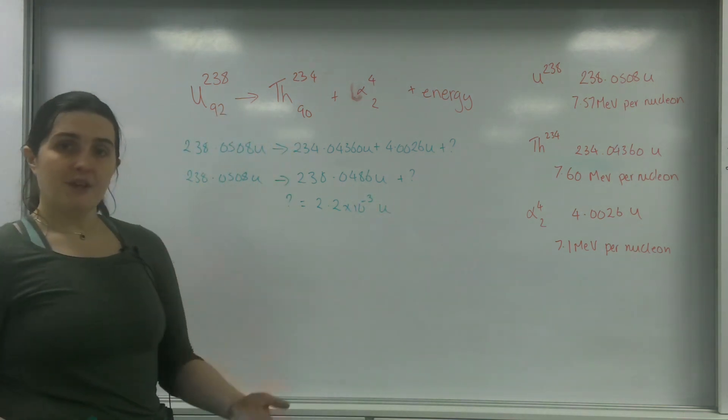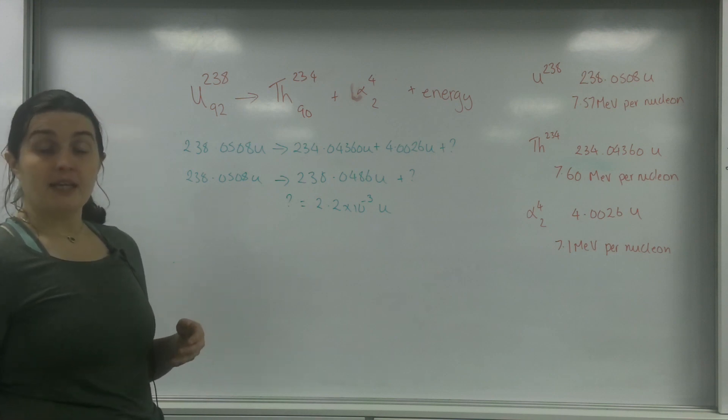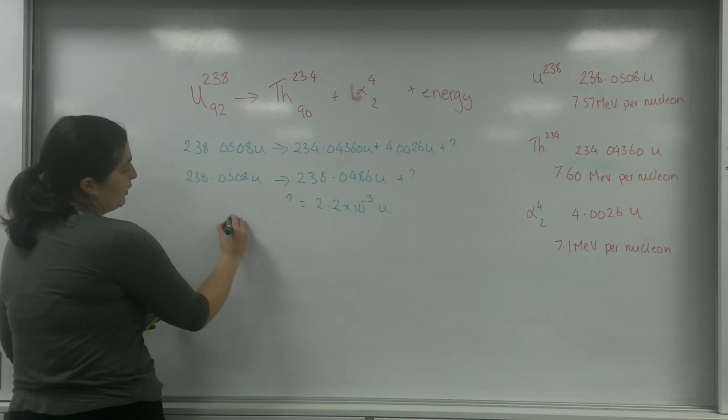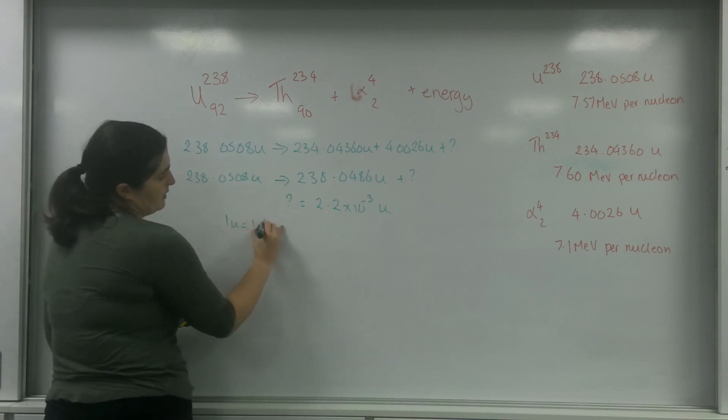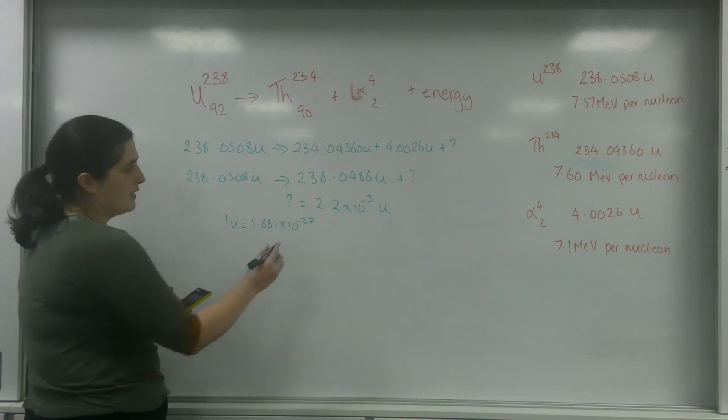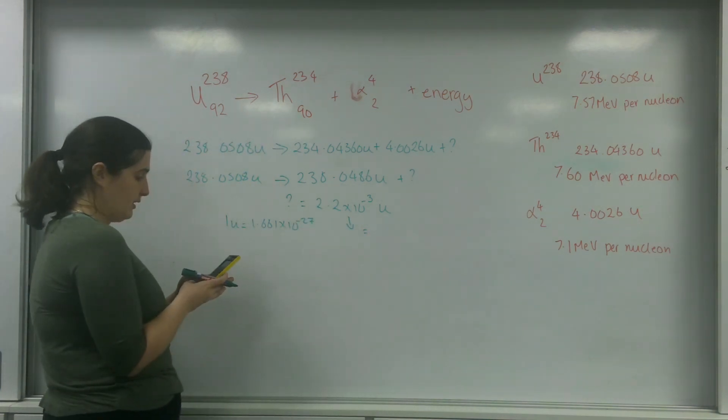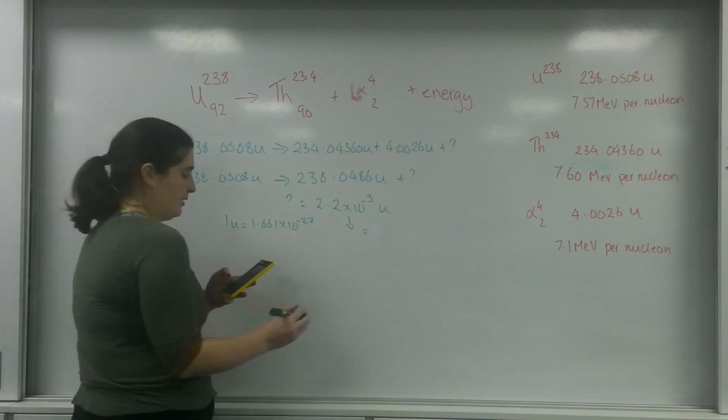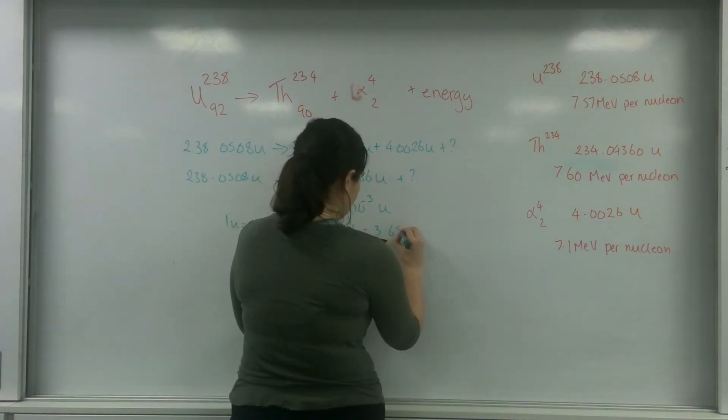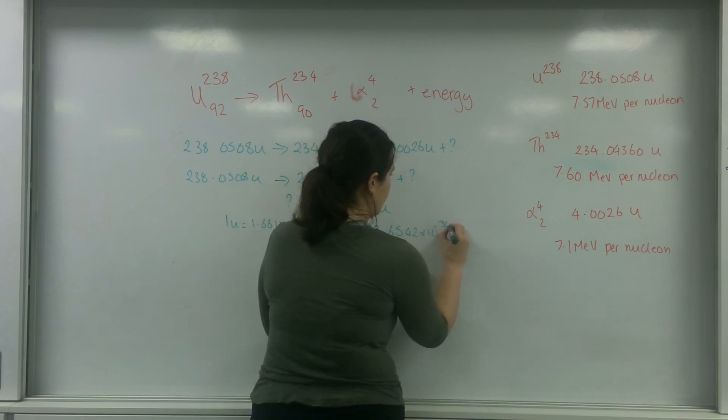I can convert that into joules using E equals mc squared. 1U is 1.661 times 10 to the minus 27 kilograms, so this equals 3.6542 times 10 to the minus 30 kilos.